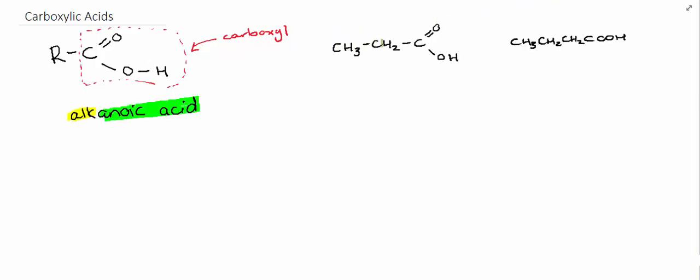It's important when naming carboxylic acids that you include the carbon within the functional group in the name. So you can see in this case we've got three carbon atoms in the chain, so this would be propanoic acid.